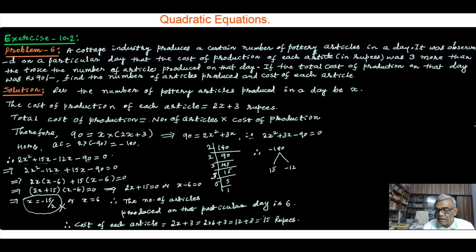Now you can see 15 into 6 is 90, that is the total cost of production. And hence our answer is right.